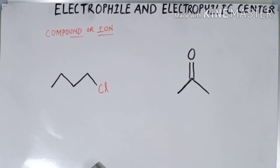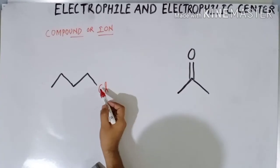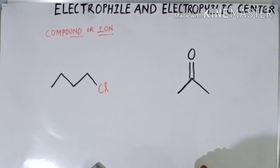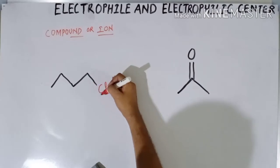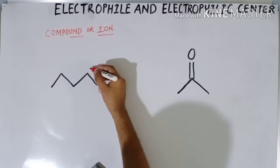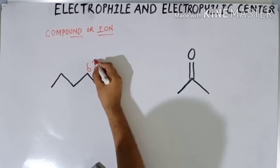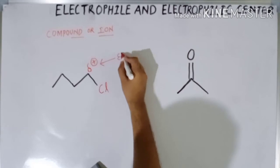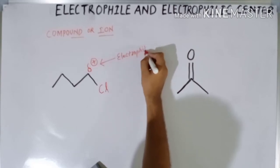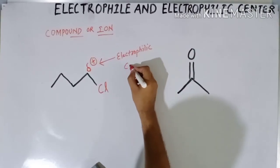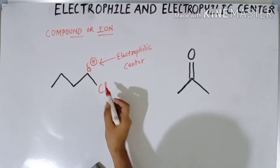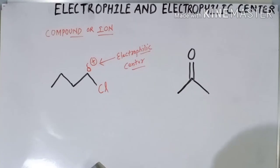In the first compound, a chlorine atom is directly attached to a carbon. Chlorine is an electronegative atom, so due to the inductive effect, it pulls the electrons of the carbon-chlorine bond toward itself. As it pulls the electrons toward itself, this carbon carries a slightly positive charge — delta positive — and thus this carbon becomes an electrophilic carbon and an electrophilic center. The whole molecule becomes an electrophile.